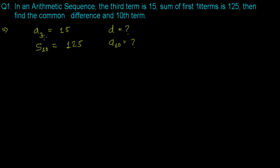Just like the third term is 15, we need to find the 10th term. Whatever the given information is, try to formulate it and get the unknown quantities from there. To find any term, you must get the common difference and the first term. If you know the first term and the common difference of an arithmetic progression, then you can find out everything the question is asking.